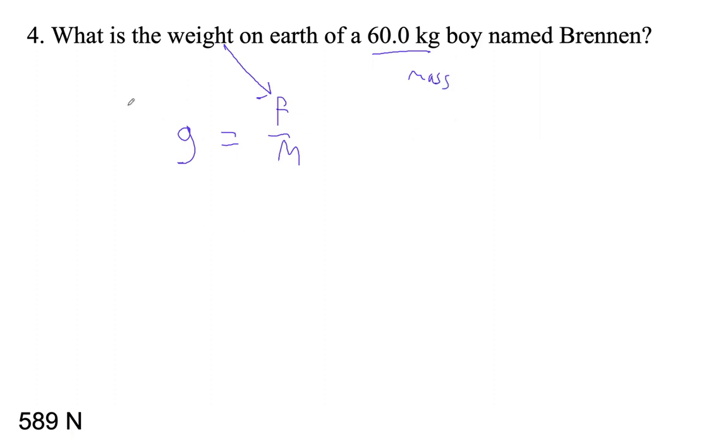And then G on earth is 9.81 newtons per kilogram. That's the gravitational field strength at the surface of the earth. It's less above the earth. It's different on different planets, but on the surface of the earth, we just use that, right?